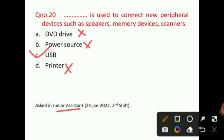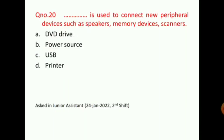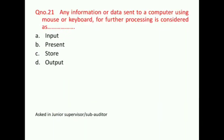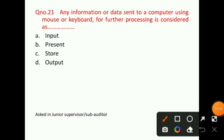This question was also asked in a junior assistant shift. Question number 21: Any information or data sent to a computer using a mouse or keyboard for further processing is considered as — the correct answer for question number 21 will be option A, that is, input. This question was asked in a junior supervisor sub-auditor shift.